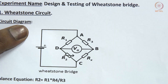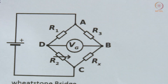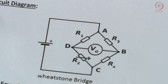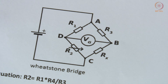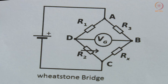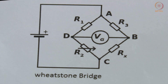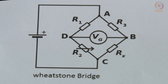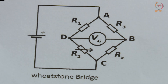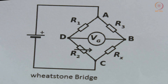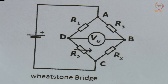Here is the Wheatstone circuit. It comprises of a DC power supply, 2 fixed resistors, 1 variable resistor, and 1 unknown resistor. We are going to find the value of the unknown resistor using this circuit.